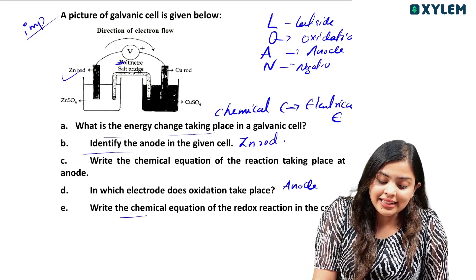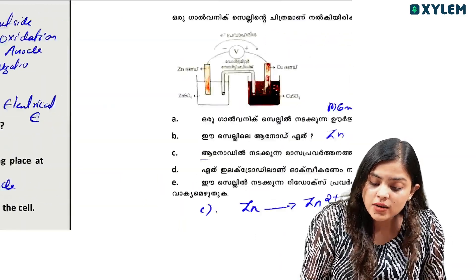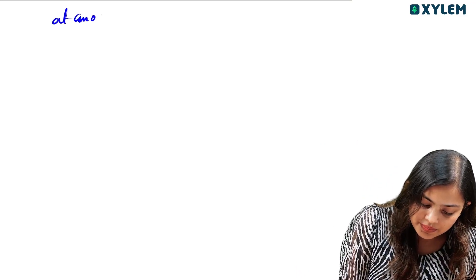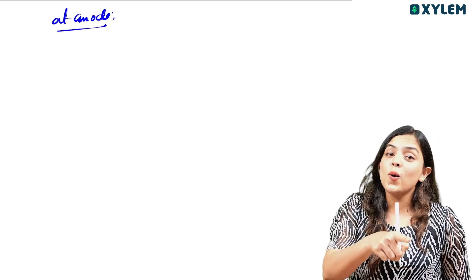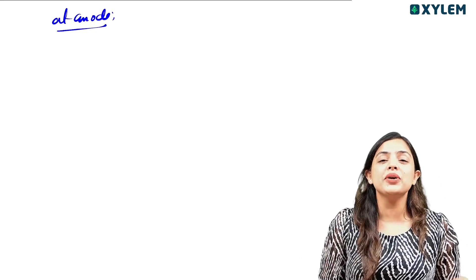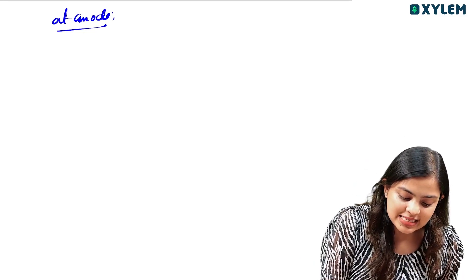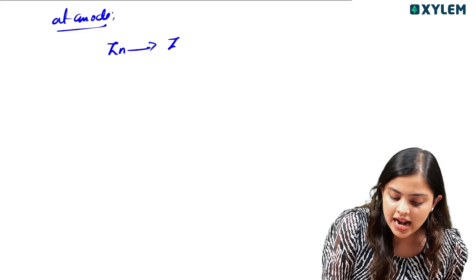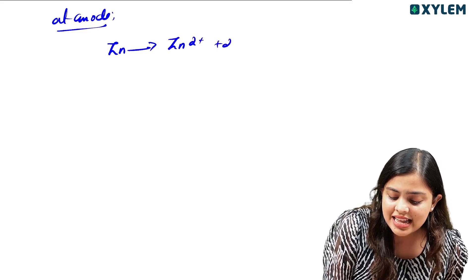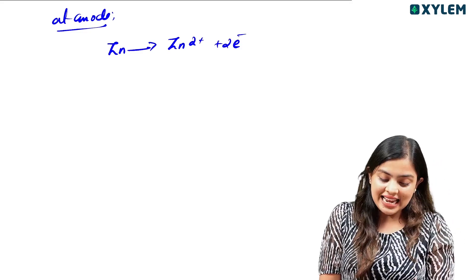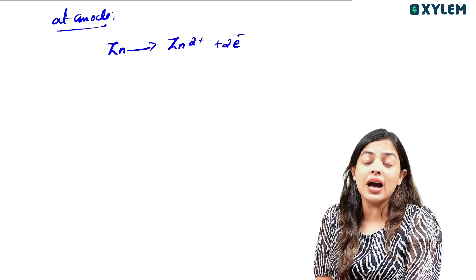Write the chemical equation of the redox reaction in this cell. We have studied the anode — anode undergoes oxidation. We already have two electrons, Zn gives Zn2+. This is anode oxidation.